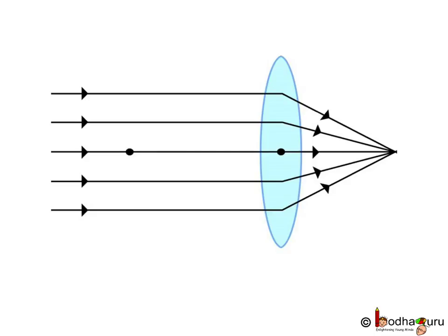So in ray diagrams we don't show refraction at each surface separately. Instead we bend the ray once after that it follows the path of the emerging ray. Means in ray diagram we show ray entering the lens and then emerging from it after bending. We don't need to show what happens inside the lens.